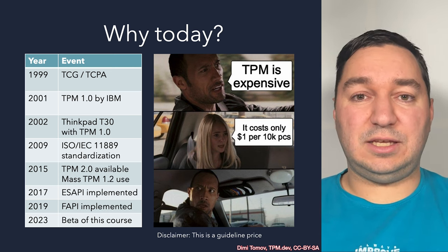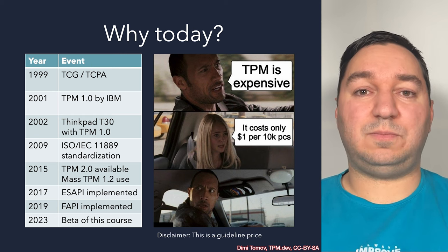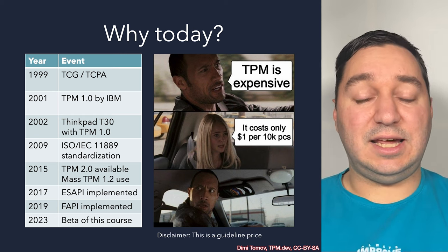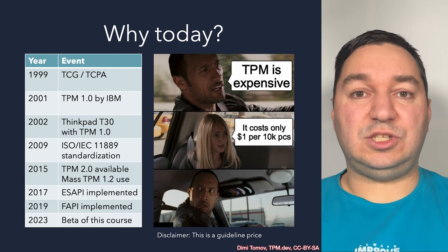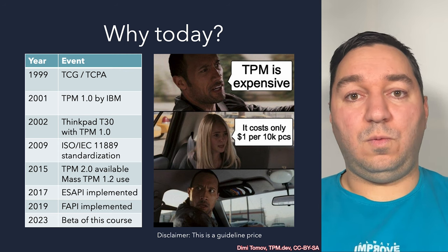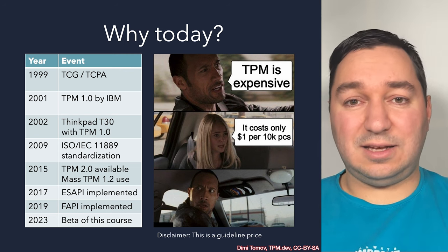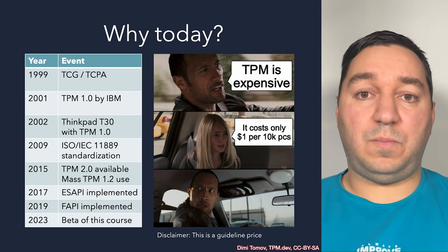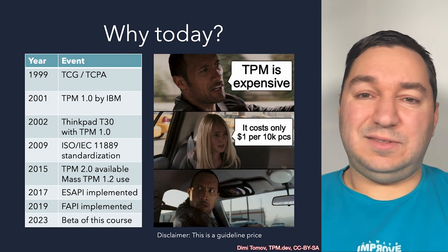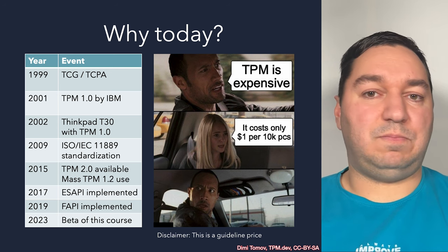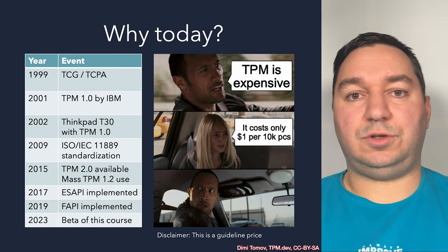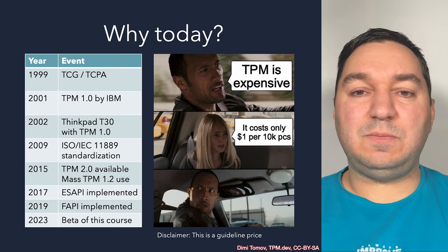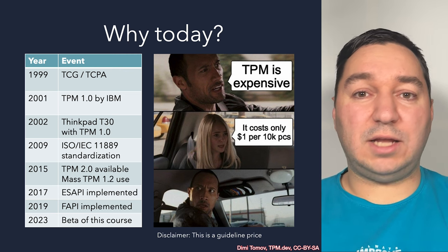In 2015, we had to order 100,000 pieces to get the $1 per unit price. In 2019, this changed — we could order only 10,000 pieces and still get the $1 per unit price. This happened for various reasons: the market was more mature, there was more capacity at the manufacturing plants, and the TPM was more widely adopted.